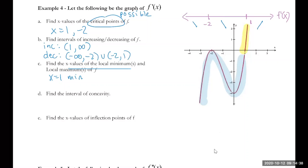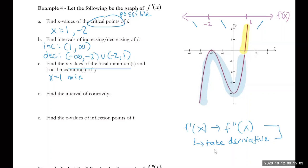Now, find intervals of concavity and points of inflection. Since this is the graph of the first derivative, the second derivative is related to it by taking the derivative of the first derivative graph. Graphically, the derivative of the first derivative graph is the slope of the tangent line. Points of inflection are where the second derivative changes signs — where the slope goes from positive to negative or negative to positive.